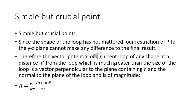Simple but crucial point: since the shape of the loop has not mattered, our restriction of P to the yz-plane cannot make any difference to the final result. Therefore, the vector potential of a current loop of any shape at a distance r from the loop, which is much greater than the size of the loop, is a vector perpendicular to the plane containing r and the normal to the loop, of magnitude A = μ₀IA sin θ / (4π r²).